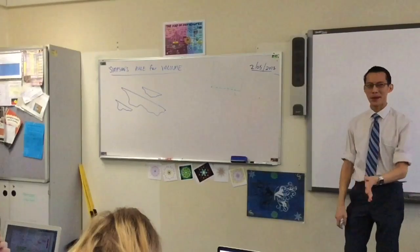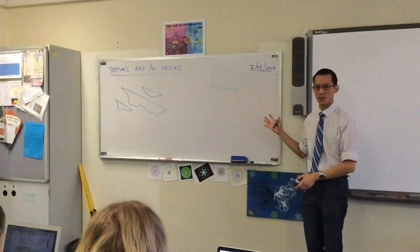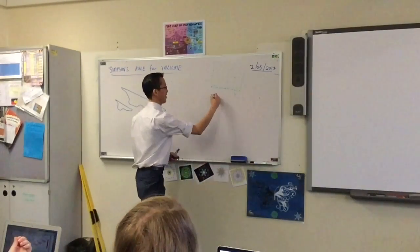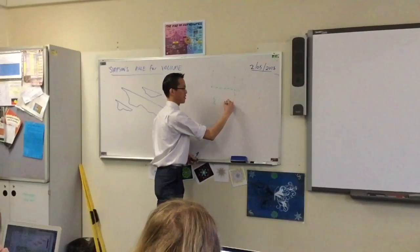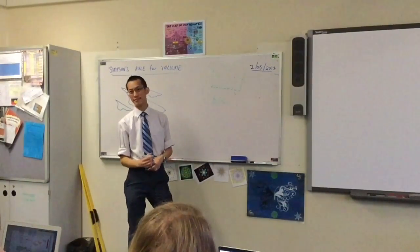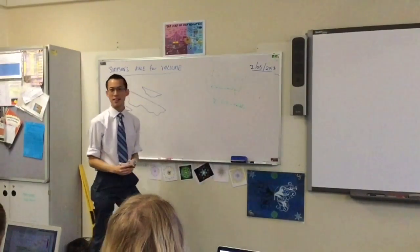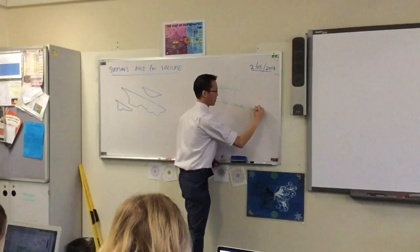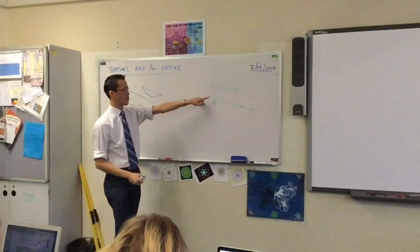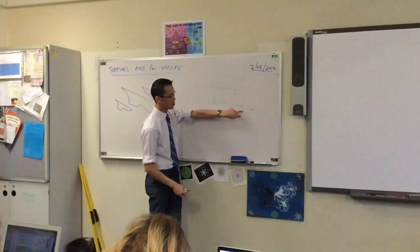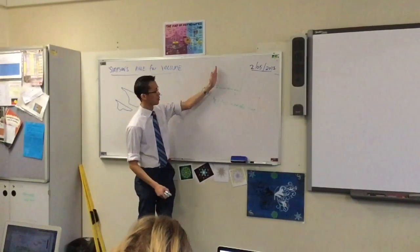Do you remember the formula for Simpson's rule? H over 3, times the first part, plus 4 times the middle part, plus the last one. Now this is the Simpson's rule that you find on the formula data sheet. Like you told me, there's this length here, then you've got 1, 2, 3 values.